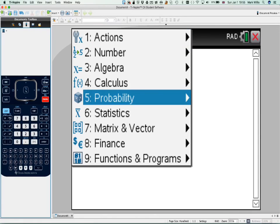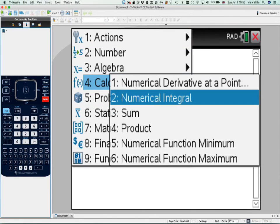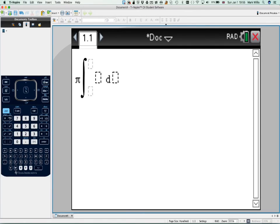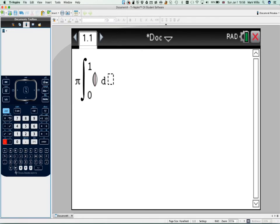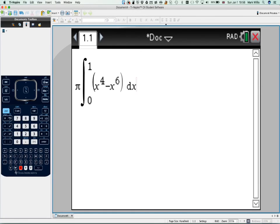And here we need to put in 0 for the lower limit, 1 for the upper limit. We need to put some brackets in here. And we need to do x to the power of 4 minus x to the power of 6 dx. So writing down the correct integral is quite important. Pressing enter.